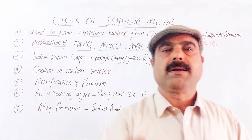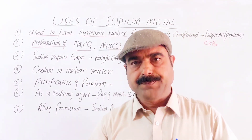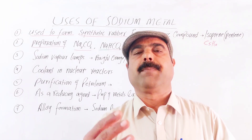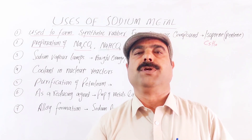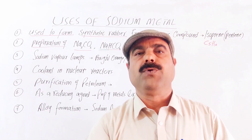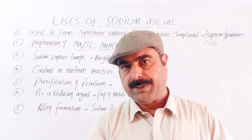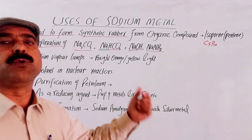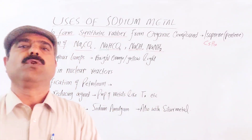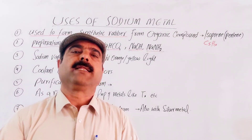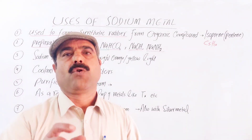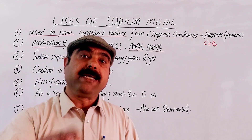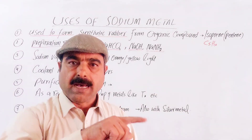Petroleum is a naturally occurring mixture of minerals. It is purified into fractions such as petrol or gasoline, diesel, kerosene, and jet engine fuel. Sodium metal is used to remove sulfur from petroleum — a process called desulfurization of petroleum.